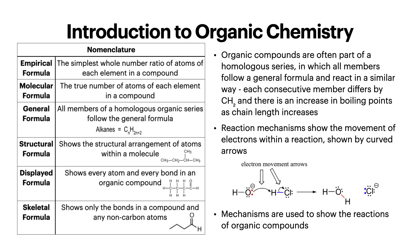Structural formula shows the structural arrangement of atoms within a molecule. Displayed formula shows every atom and every bond in an organic compound. Skeletal formula shows only the bonds in a compound and any non-carbon atoms — it assumes that every carbon atom has two to three hydrogen atoms, depending on where it is in the molecule, unless stated otherwise.